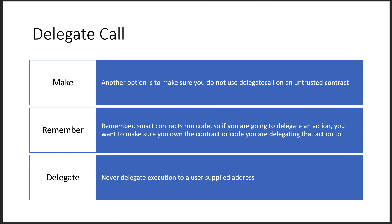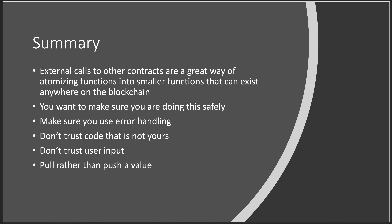Never trust anything from a user. When making external calls to other contracts, these are a great way of atomizing functions and code reuse, but you want to make sure you're doing this safely. Always use error handling 100% of the time. Never trust code that's not yours, never trust user input, and pull rather than push a value. These are just some common sense things when doing external calls. That's it for this lecture on external calls — see you in the next one.